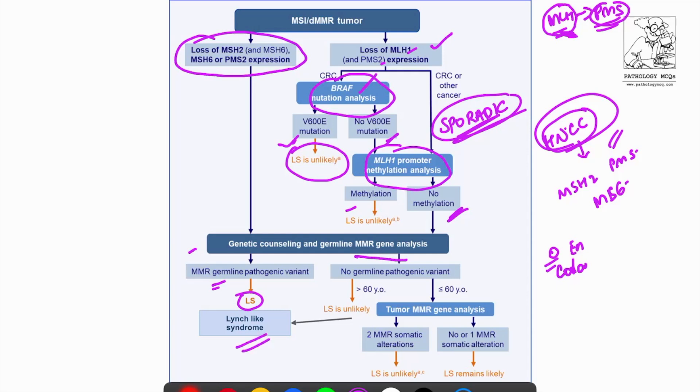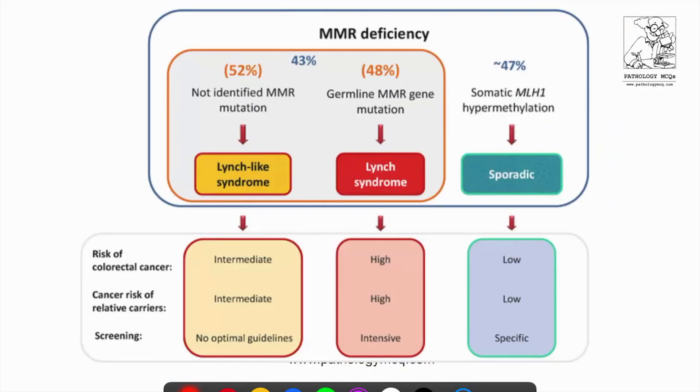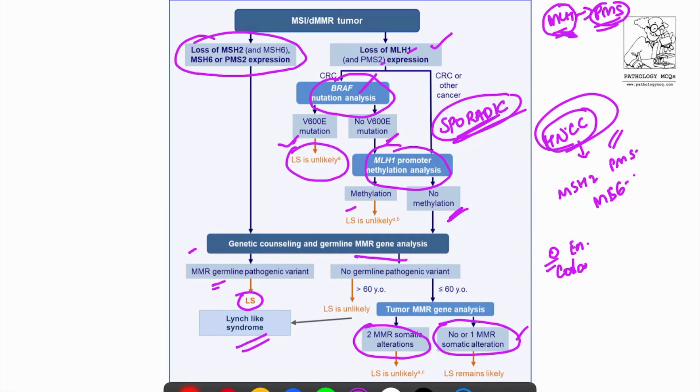So that is Lynch-like syndrome. Neither will you find any sporadic mutations. If you do not find any germline mutations, there are still chances that sporadic mutations may result in loss of MLH1 and PMS2 expression. So the last step is to go ahead and do a sporadic mutation testing in all of the four genes after germline mutation have come out to be negative. This is the basic protocol which is followed.